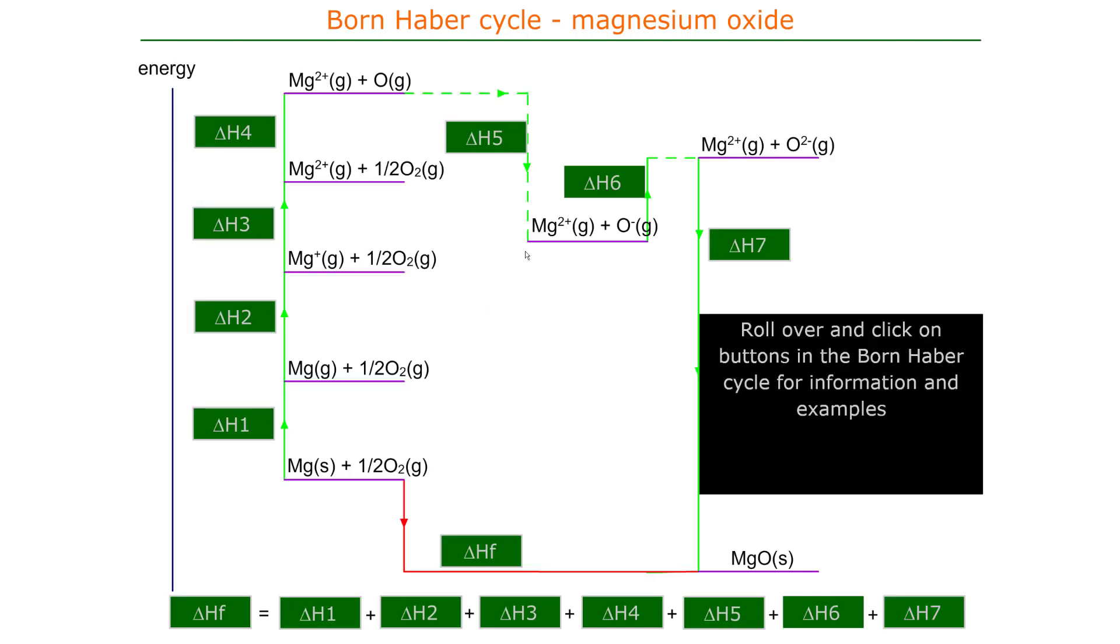The second electron affinity is actually an endothermic process because you're forcing an electron onto a negative particle. Bringing two negative particles together requires energy. So this step, the second electron affinity, is endothermic.